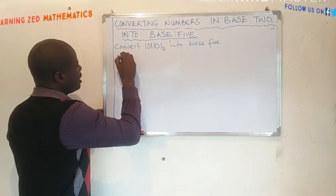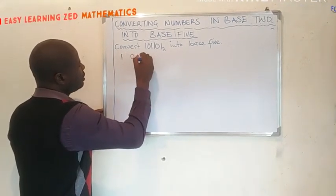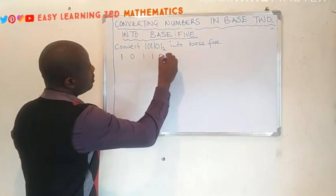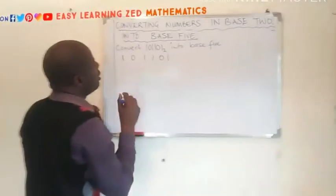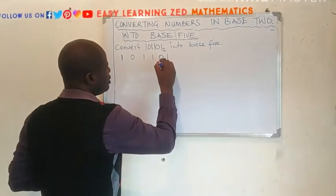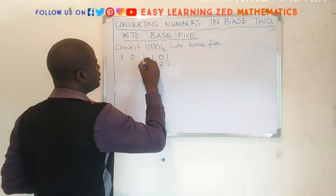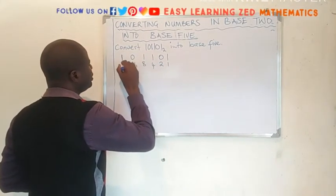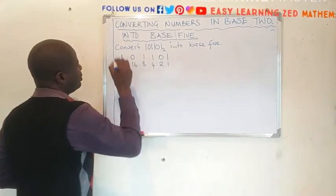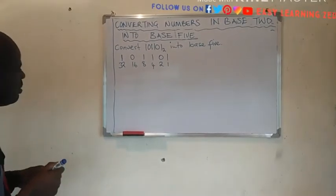The figures in this number, they are 1, 0, 1, 1, 0, 1. What is the place value of this number? It's 1, then this one is 2, this one is 4, this 8, this 16, this 32. So those are the place values of the numbers in the figure.